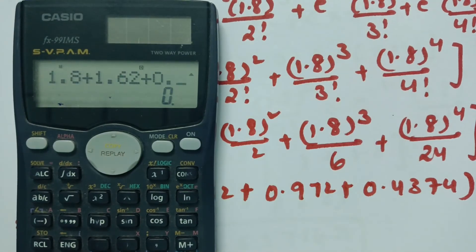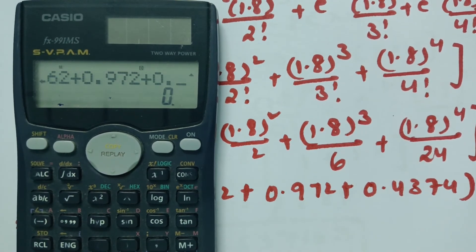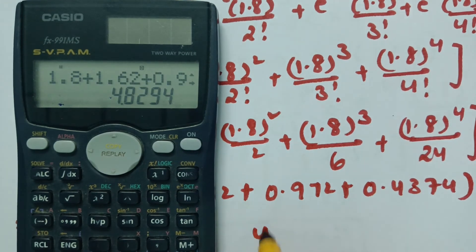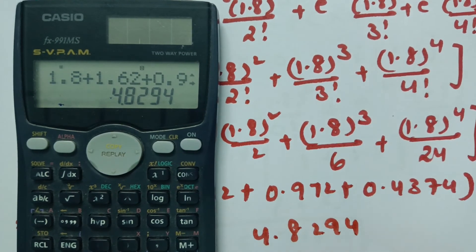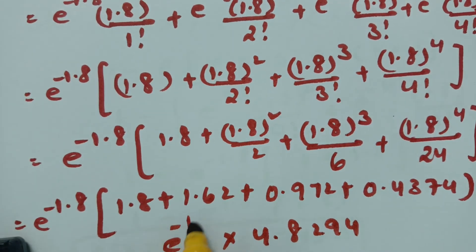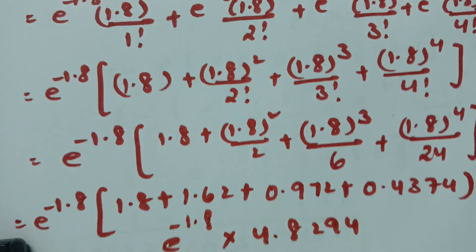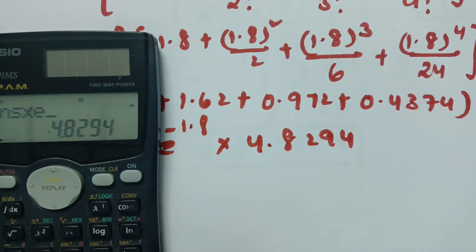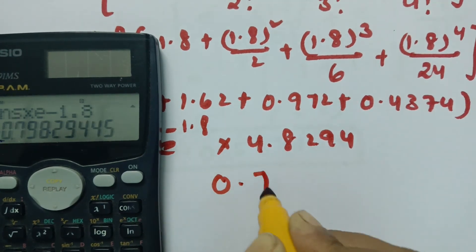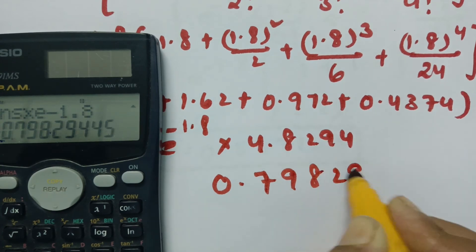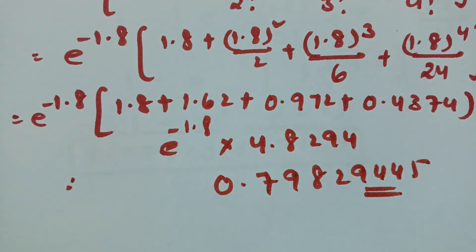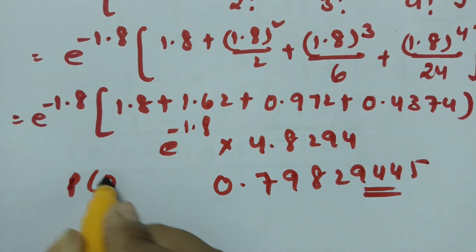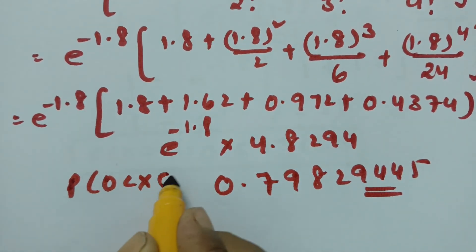Adding the terms: 1.8 + 1.62 + 0.972 + 0.4374 = 4.8294. Multiplying by e^(−1.8) gives P(0 < x < 5) = 0.79829445.